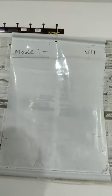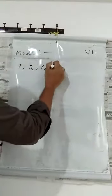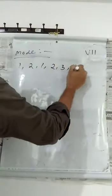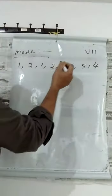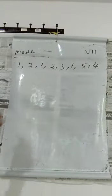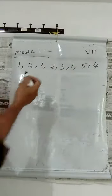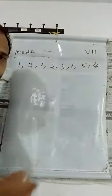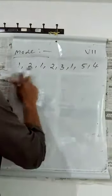Mode is the observation that occurs the most often. One problem: the data is 1, 2, 1, 2, 3, 1, 5, 4. There are eight observations. Find the mode of this data.